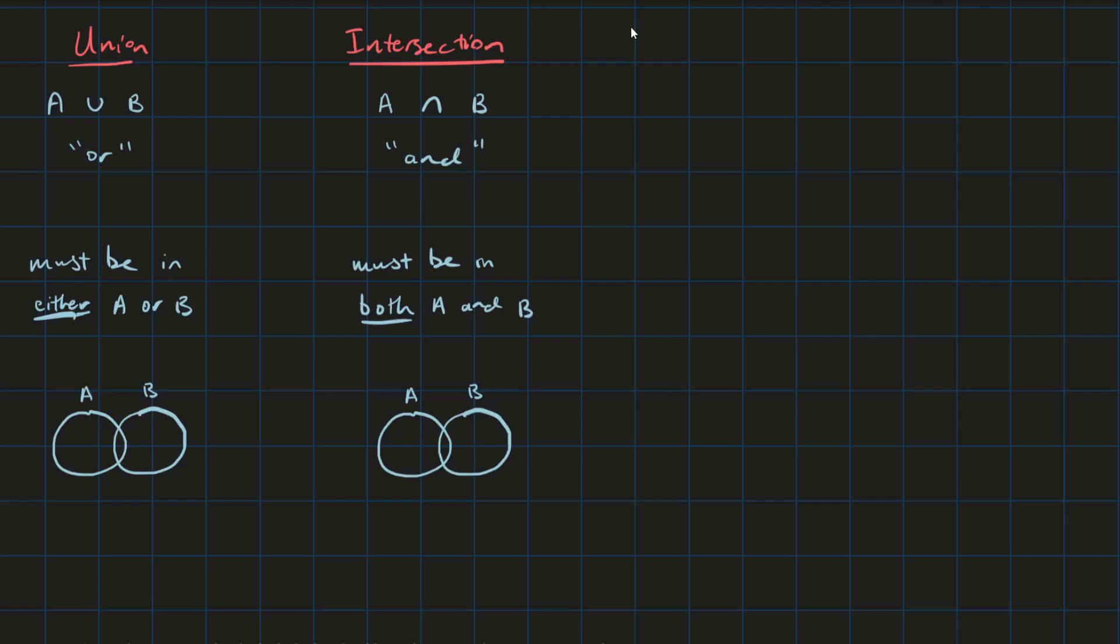Two really important operators that are used in all different types of probability methods are called the union and the intersection. The union is represented by the symbol U, and the intersection is represented by this little bridge that connects the two events A and B.